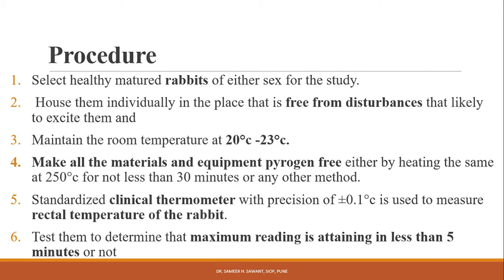Now, the procedure. Select healthy mature rabbits of either sex for the study. House them individually in a place free from disturbance. Maintain the animals at room temperature of 20 to 23 degrees centigrade. Make all materials and equipment pyrogen-free by heating them at 250 degrees centigrade for not less than 30 minutes.